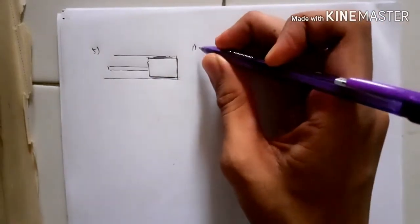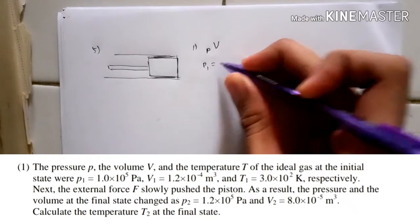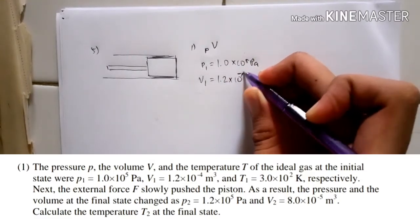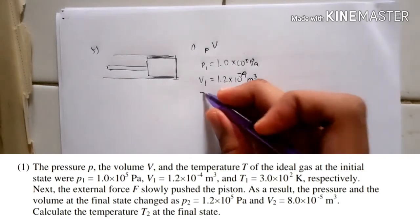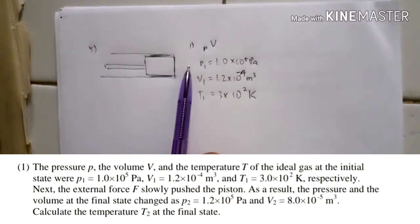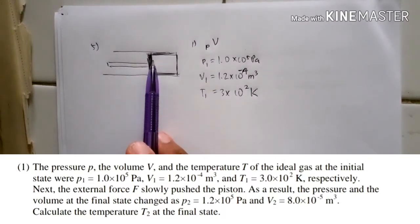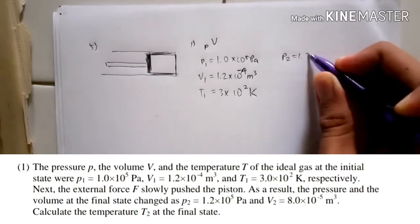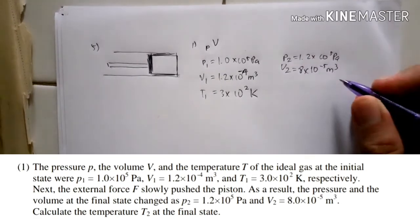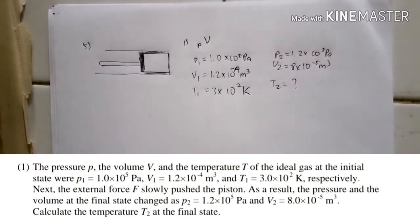Number one: the pressure P, volume V, and temperature T of the ideal gas. At the initial state, the pressure P1 is 10 to the power of 5 Pascal, the initial volume V1 is 1.2 times 10 to the power of minus 4 cubic meters, and the initial temperature T1 is 3 times 10 to the power of 2 Kelvin. The external force F slowly pushes the piston. As a result, in the final state the pressure P2 is 1.2 times 10 to the power of 5 Pascal, the final volume V2 is 8 times 10 to the power of minus 5 cubic meters. Calculate the final temperature T2.